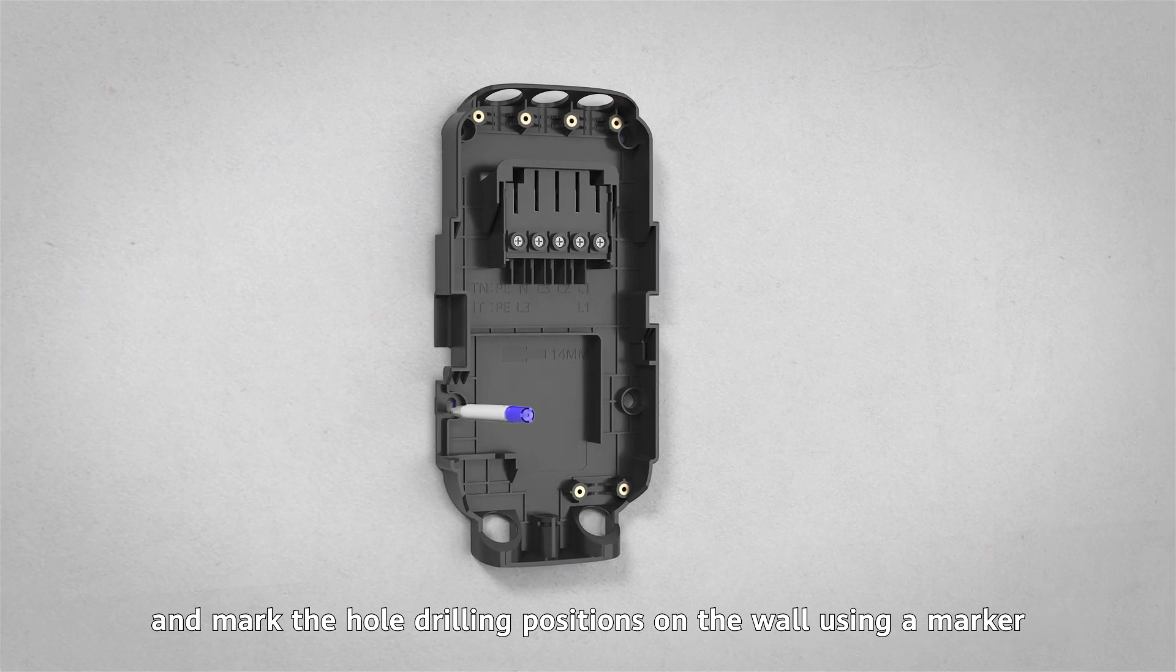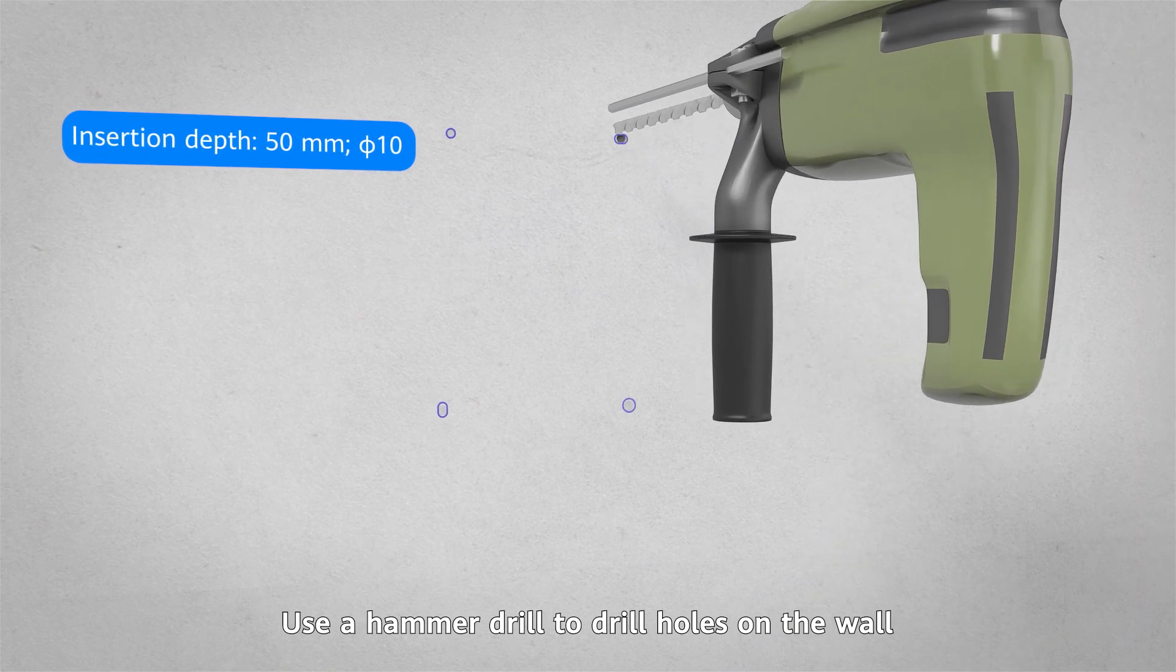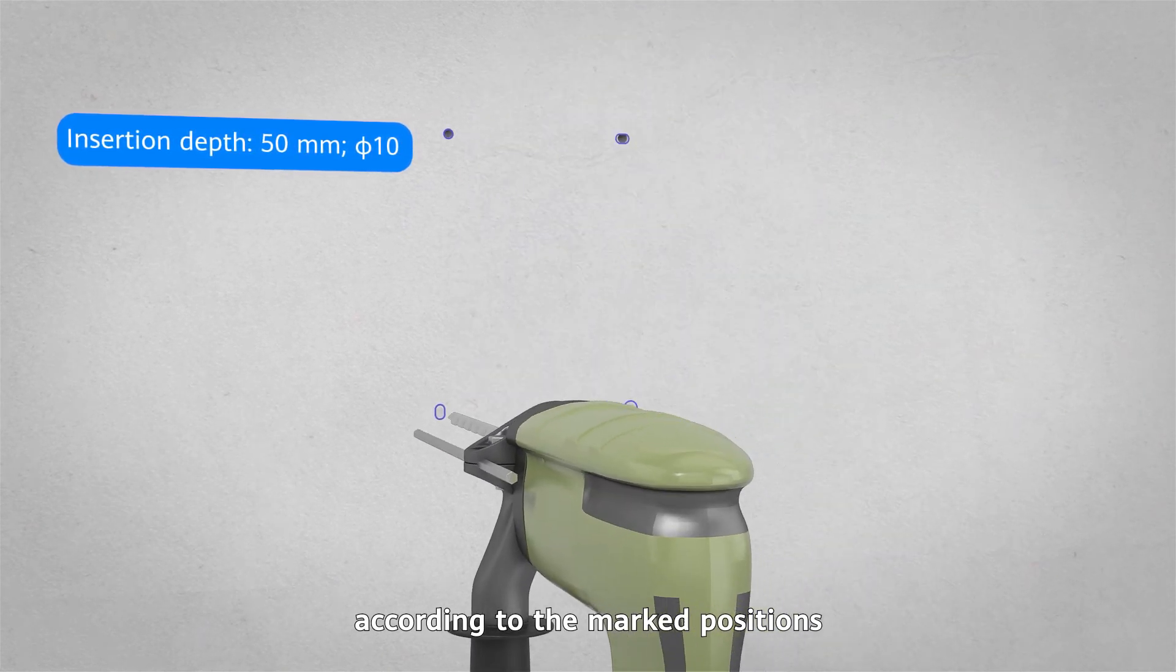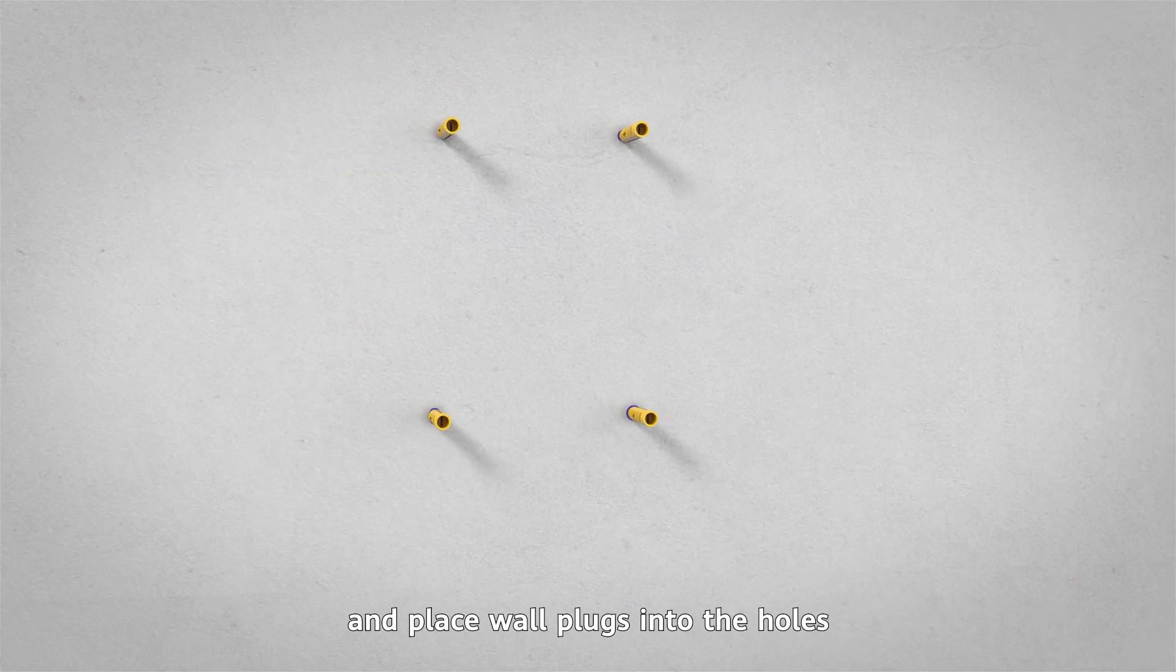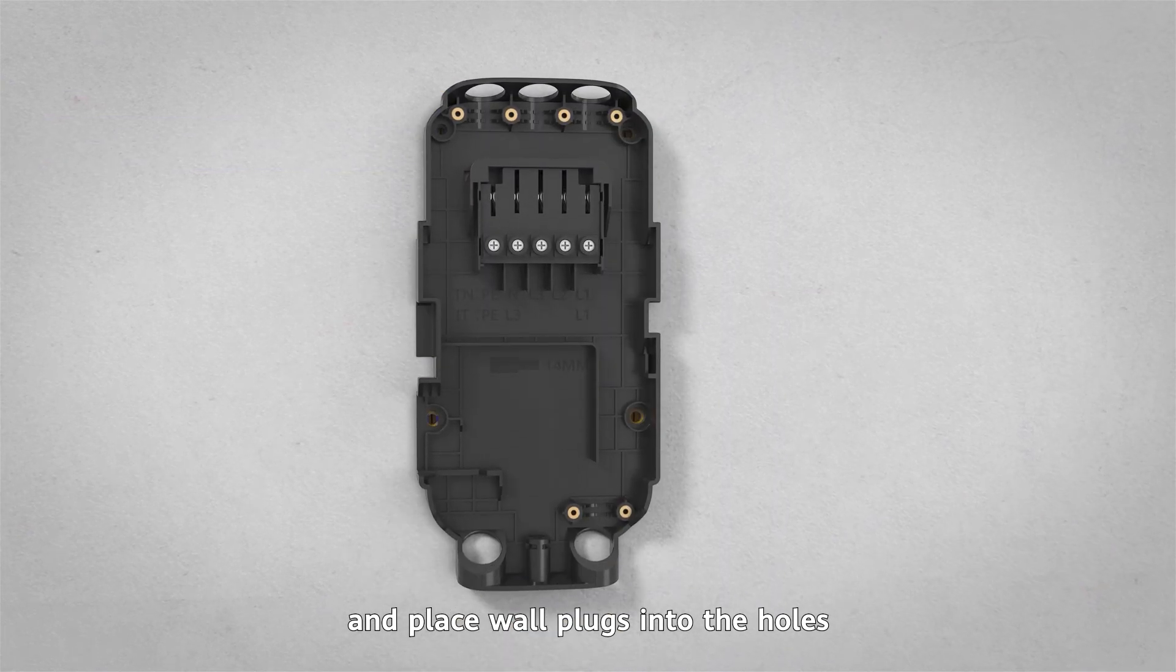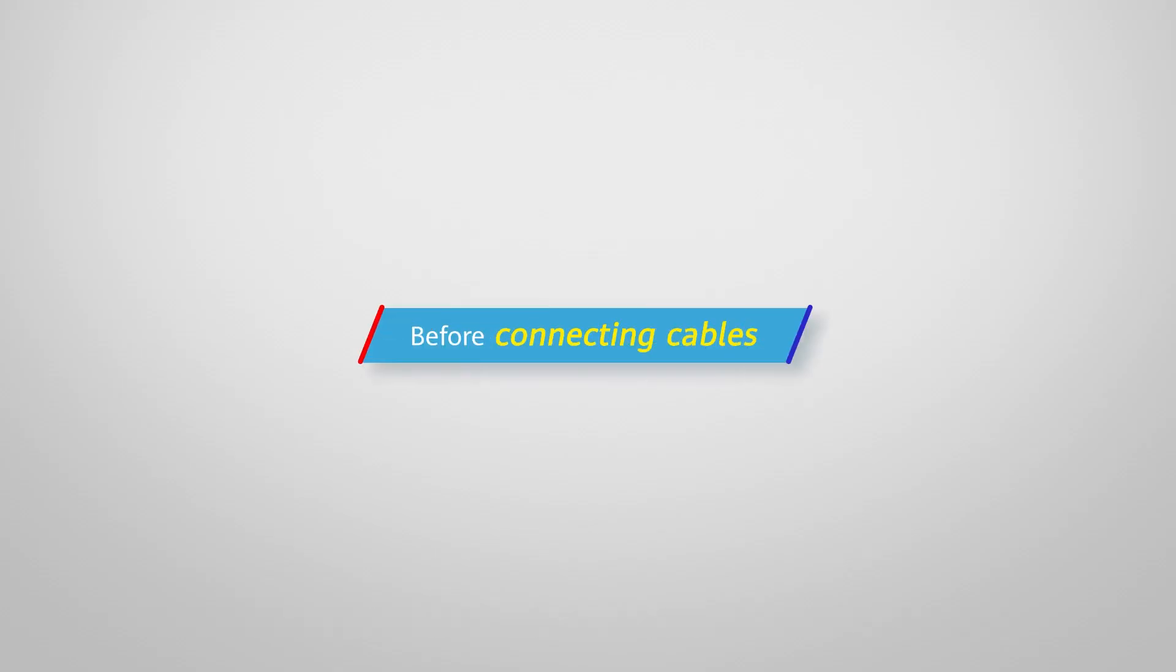Use a hammer drill to drill holes on the wall according to the marked positions and place wall plugs into the holes. Use wall mounting screws to secure the rear cover to the wall. Before connecting cables, ensure that the upstream RCBO is turned off.